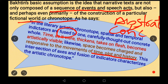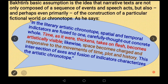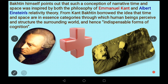A writer manipulates time and space according to his own vision and navigates within this particular field. In formalism, this term is useful because according to Bakhtin, every particular genre has its own particular chronotope. Bakhtin himself points out that this conception of narrative time and space was indebted to philosopher Immanuel Kant and Albert Einstein's relativity theory.